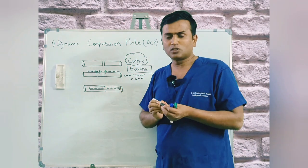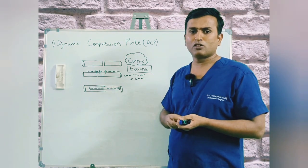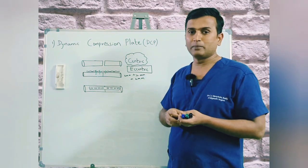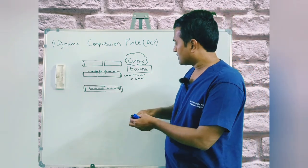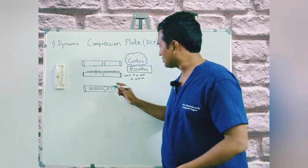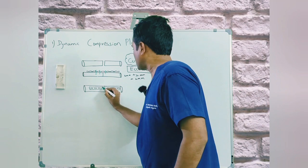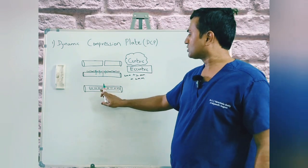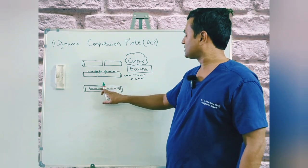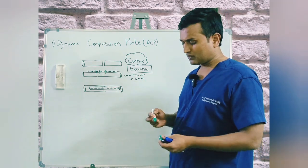By using two eccentric screws we get a total compression of 2 mm. Similarly, fixing two eccentric screws on the other side of the fracture also gives 2 mm of compression.